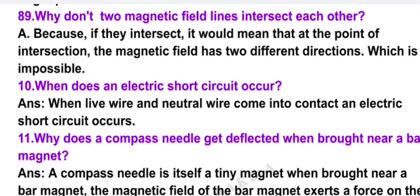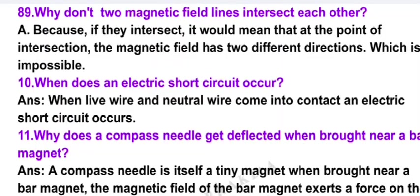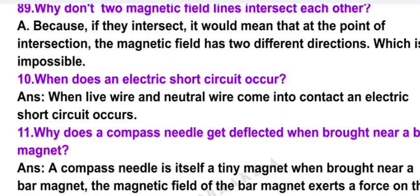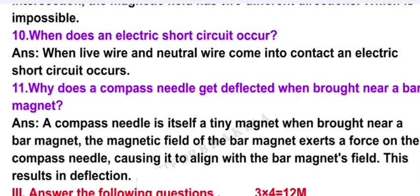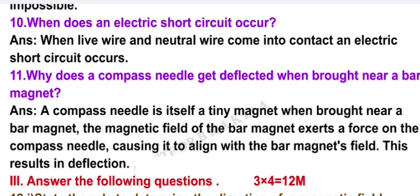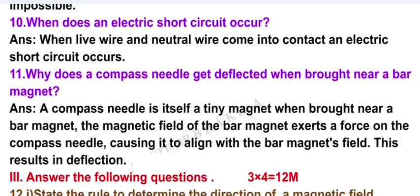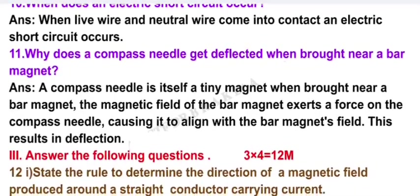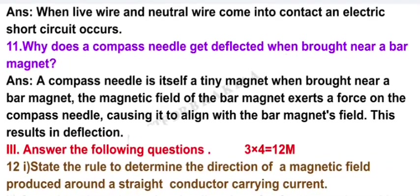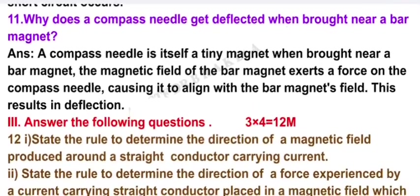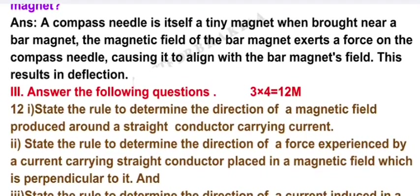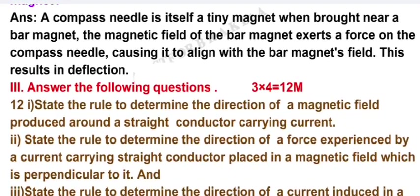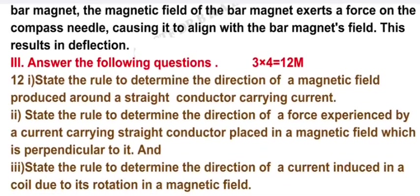When does an electric short circuit occur? Answer: when live wire and neutral wire come into contact, an electric short circuit occurs. Why does a compass needle get deflected when brought near a bar magnet? A compass needle is itself a tiny magnet. When brought near a bar magnet, the magnetic field of the bar magnet exerts a force on the compass needle, causing it to align with the bar magnet's field. This results in deflection.